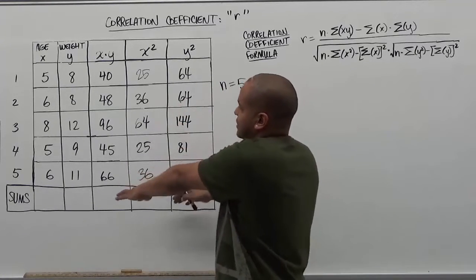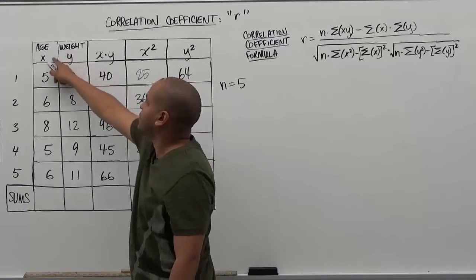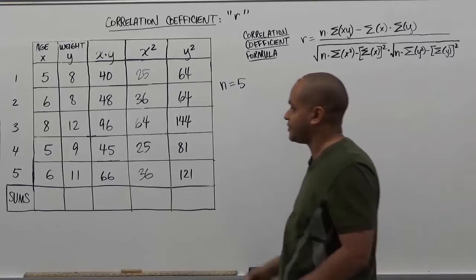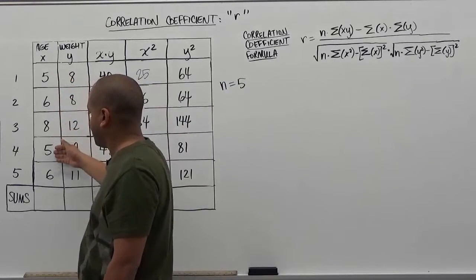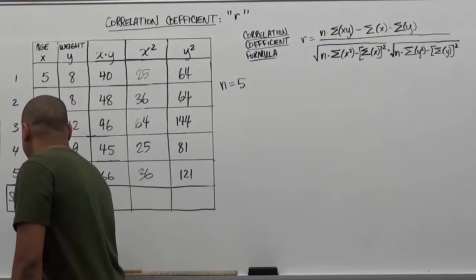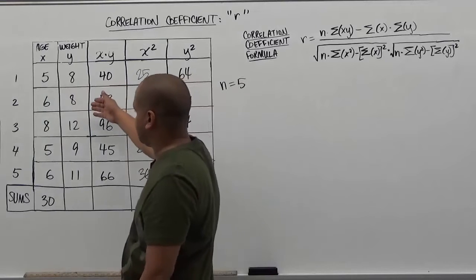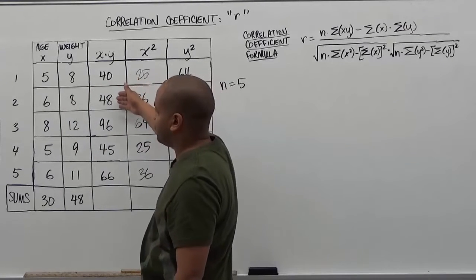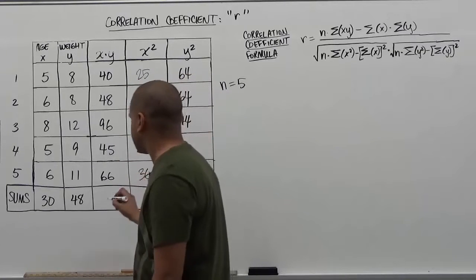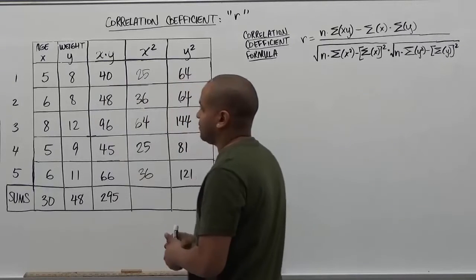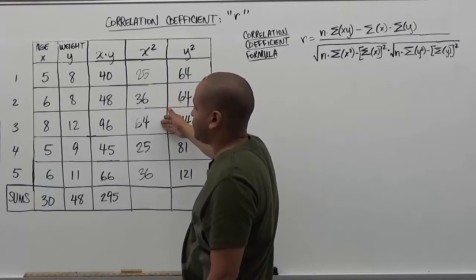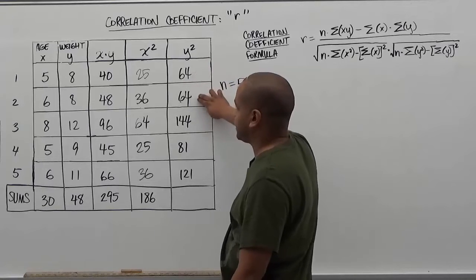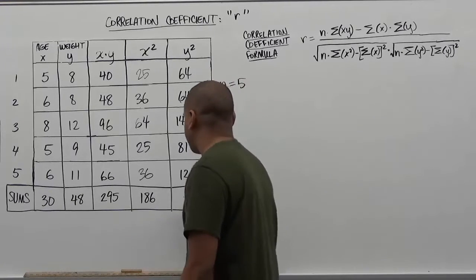Our next task is to take the sums of these columns to get the summation of each term indicated in the formula: the sum of xy, the sum of x, the sum of y, the sum of x squared, and the sum of y squared. So: five plus six plus eight plus five plus six gives us 30. Eight plus eight plus twelve plus nine plus eleven gives us 48. Forty plus 48 plus 96 plus 45 plus 66 is 295. Twenty-five plus 36 plus 64 plus 25 plus 36 is 186. And 64 plus 64 plus 144 plus 81 plus 121 is 474.